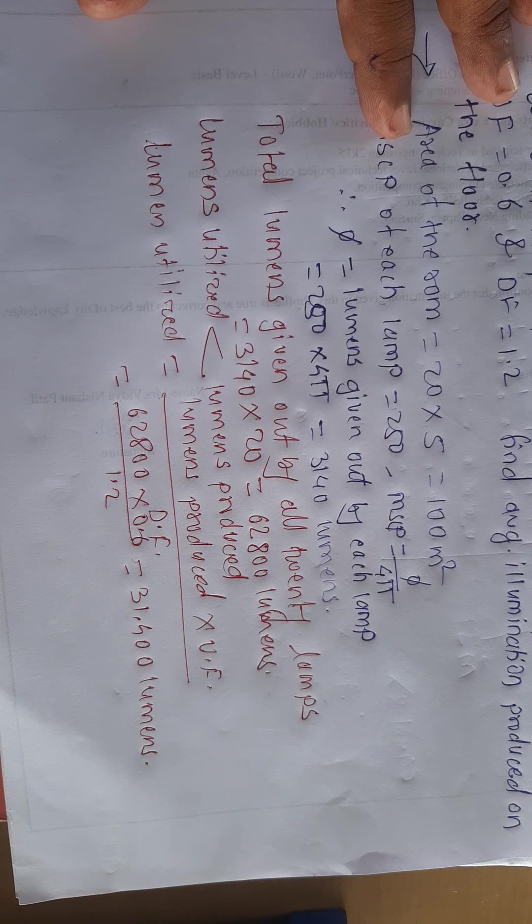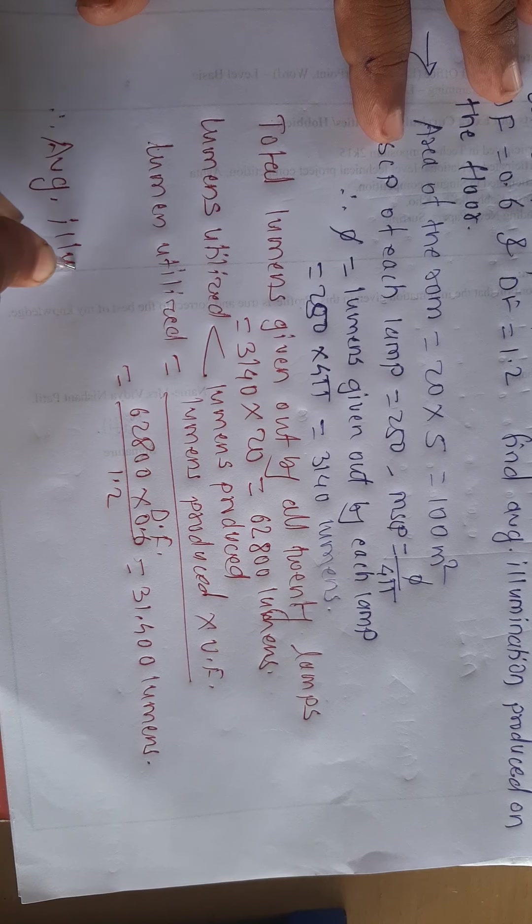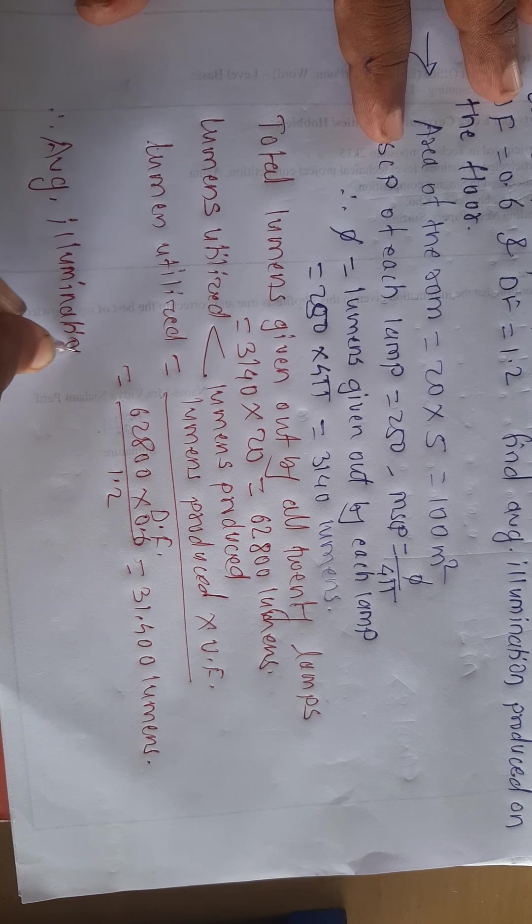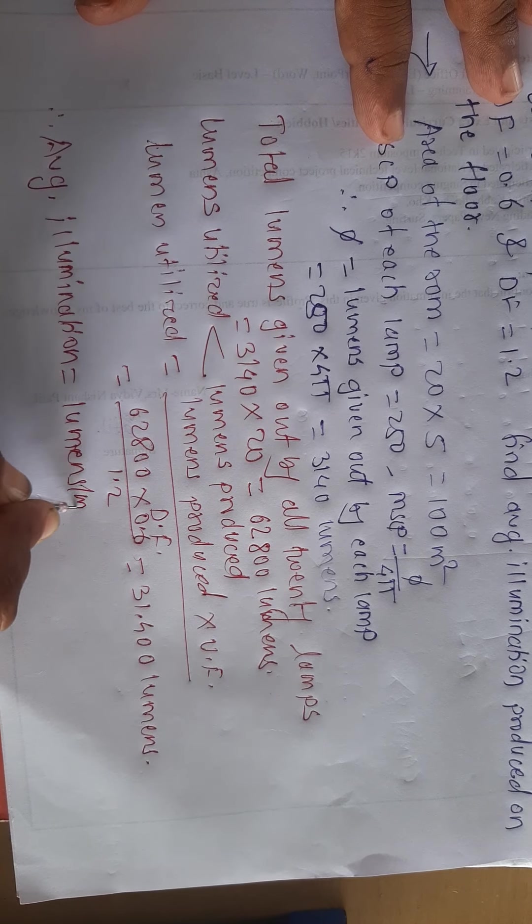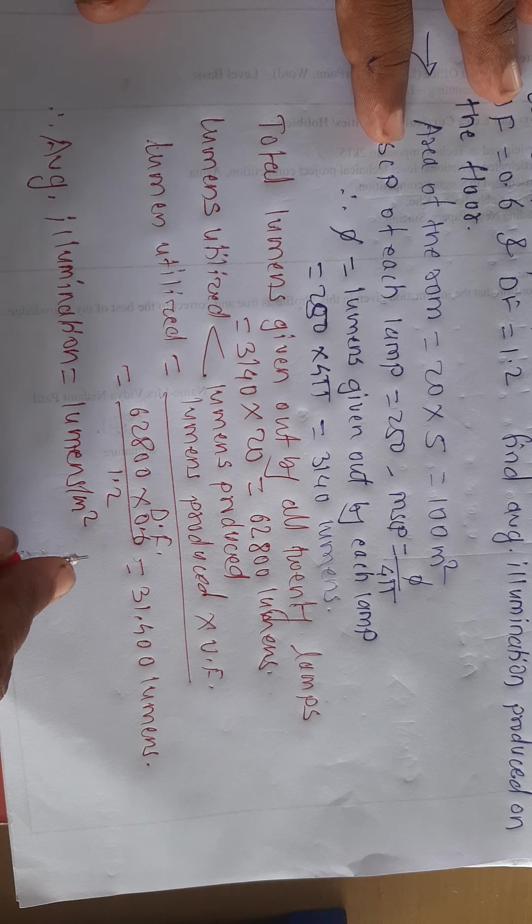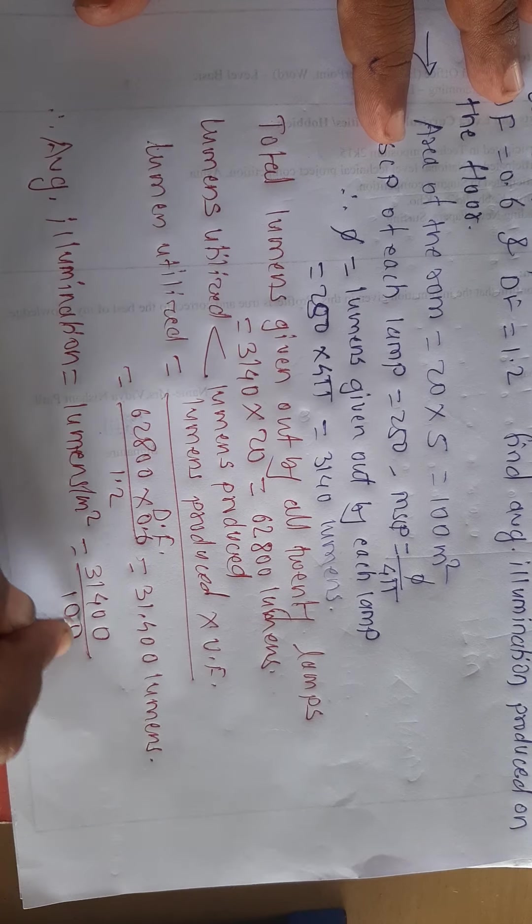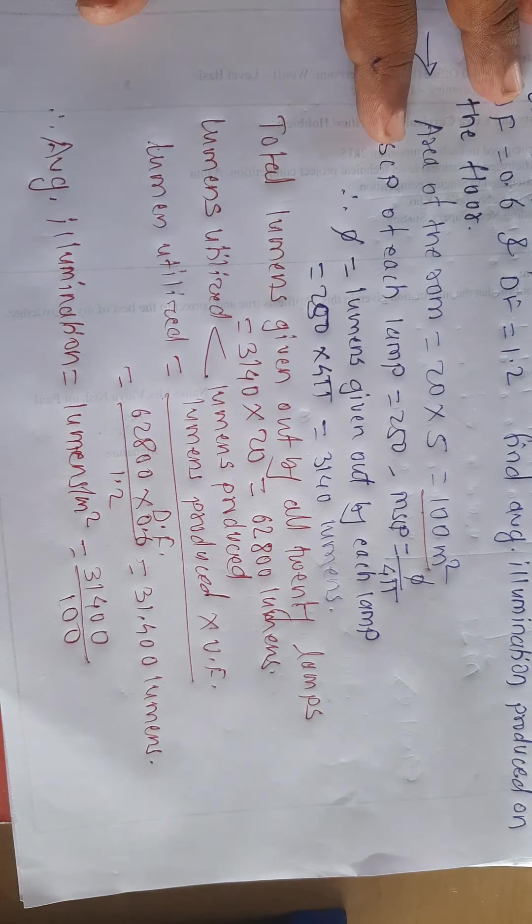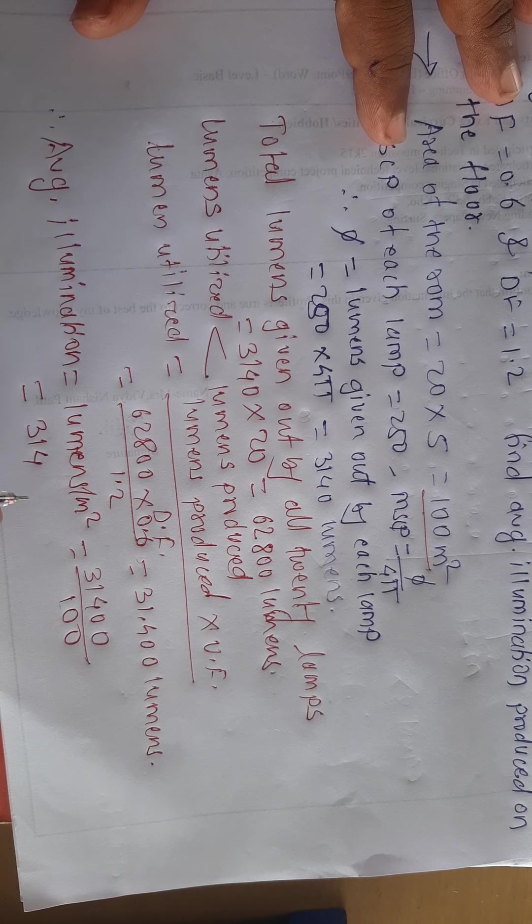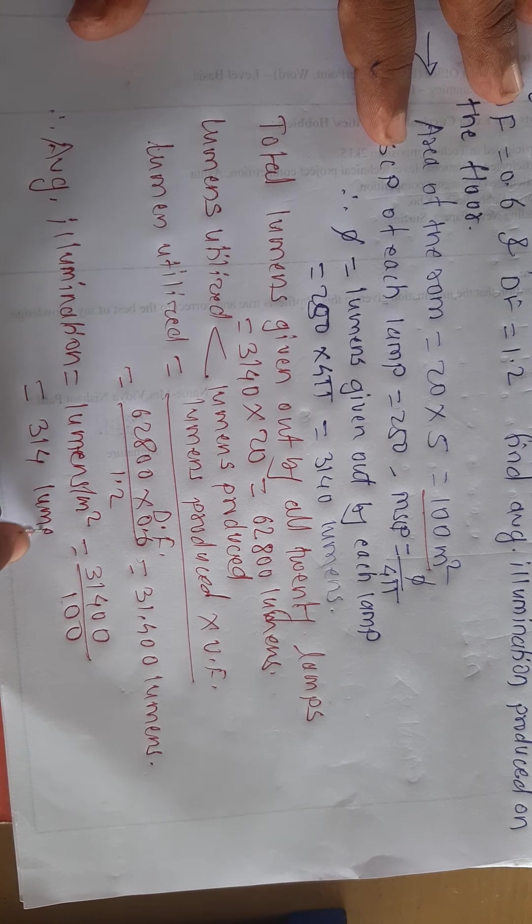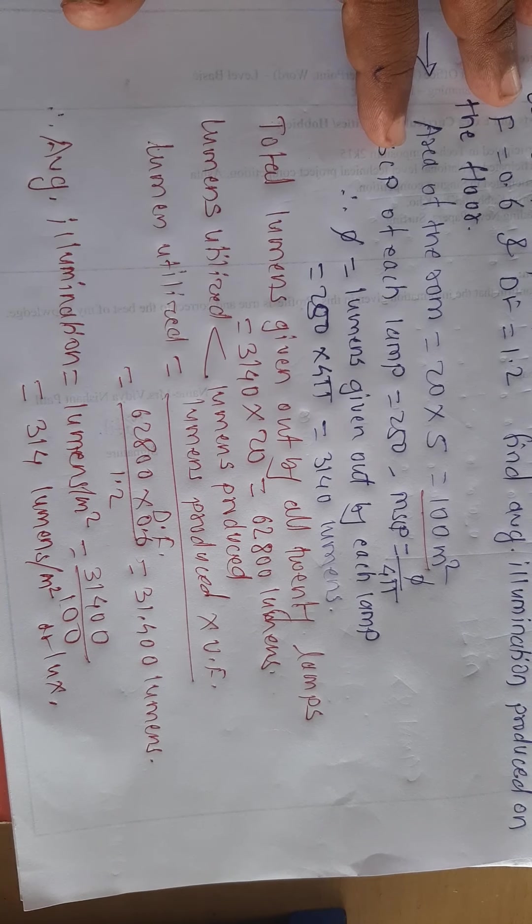Therefore average illumination means lumens per meter square, 314 lumens per meter square or lux.